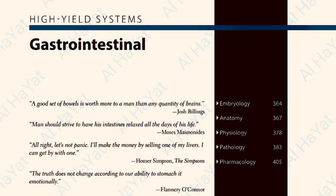Hypertrophic pyloric stenosis is the most common cause of gastric outlet obstruction in infants. There is a palpable olive-shaped mass due to hypertrophy and hyperplasia of the pyloric sphincter muscle in the epigastric region, visible peristaltic waves, and non-bilious projectile vomiting at about two to six weeks of age. It is more common in firstborn males and is associated with macrolide exposure. It results in hypokalemic hypochloremic metabolic alkalosis from vomiting of gastric acid and subsequent volume contraction. Ultrasound shows a thickened and lengthened pylorus. Treatment is surgical pyloromyotomy.